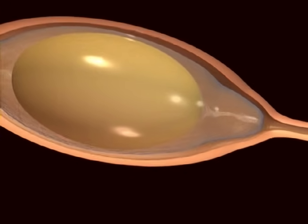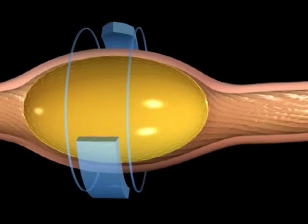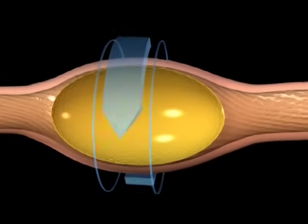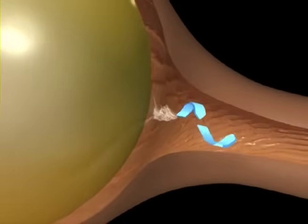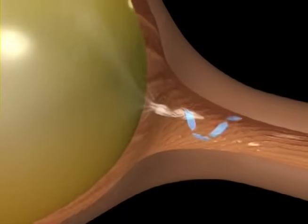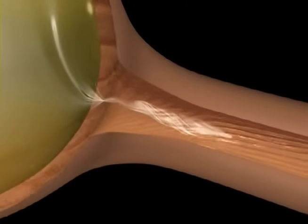As the albumin forms around the yolk, spiral ridges which run the length of the magnum cause the yolk to spin like a bullet in a rifle barrel. This spinning twists the protein fibers in the albumin, just in front of and just behind the yolk, and makes two pigtail-like structures called the chalaza.